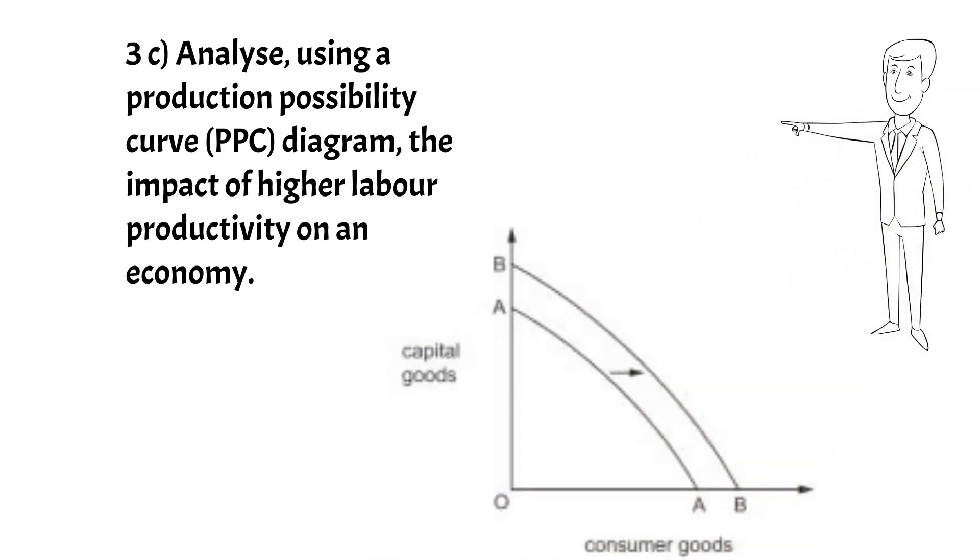Next, 3c: analyze using a production possibility curve diagram the impact of higher labor productivity on an economy. You will get one mark for each of these things: axis correctly drawn, initial curve or line sloping downward drawn to the axis, new curve or line sloping downward drawn to the axis, shift to the right indicated by arrow or lettering. And a couple more marks for your analyze: higher labor productivity will increase output per worker. This will increase productive capacity.